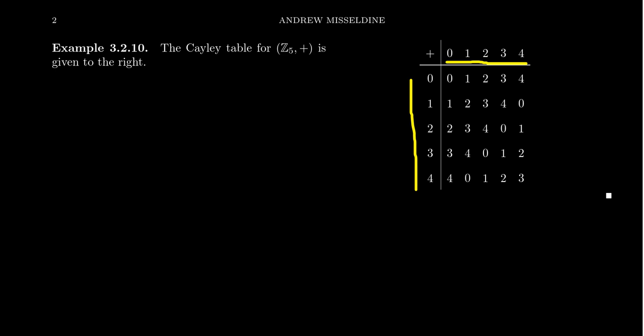It's not required, but it's best practice to write the rows and the columns in the same order, and we traditionally like to put the identity element first. When you look at a group like Z5, it makes sense to put them in ascending order. For most groups though, there's not some well-understood notion of ordering. We also typically like to indicate the operation symbol itself, like this is a plus. The notion of a Cayley table actually makes sense for any binary operation—it does not have to be a group to have a Cayley table.